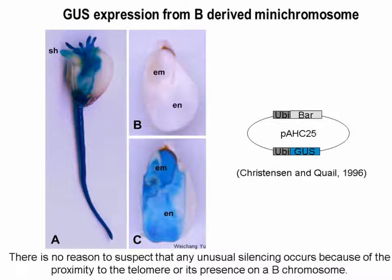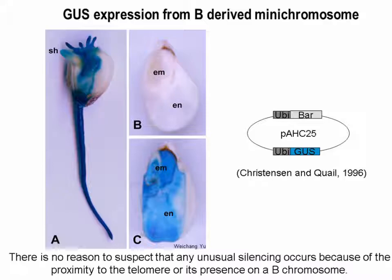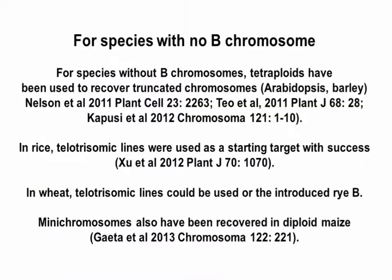One issue often asked about telomere-located genes is whether they are expressed and subjected to silencing. We have no reason to suspect that this occurs. All the transgenes we've examined—in this case we have a GUS reporter on a truncated mini-chromosome at the terminus—show that the reporter is expressed with good fidelity.